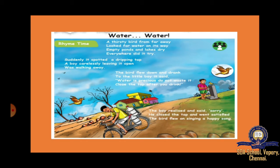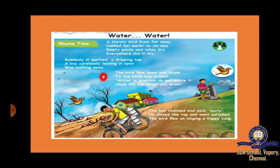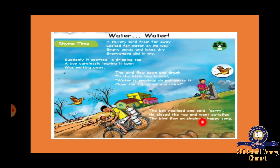First, we are going to see a rhyme — a small poem about water. A thirsty bird from far away looked for water on its way. Empty ponds and lakes dry, everywhere did it try. Suddenly it spotted a dripping tap. A boy, carelessly leaving it open, was walking away. The bird flew down and drank. To the little boy it said, 'Water is precious, do not waste it. Close the tap after you drink.' The boy realized and said, 'Sorry.' He closed the tap and went satisfied. The bird flew on, singing a happy song.